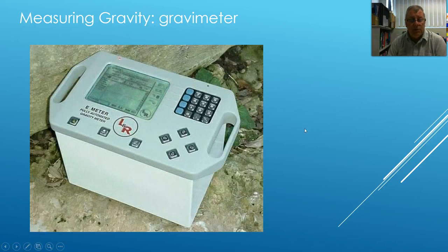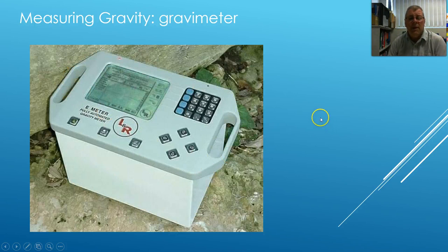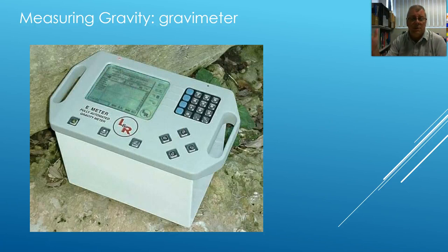And this is a modern, fully automated one which you carry around. It has its own rechargeable battery and you just press some buttons and it measures gravity to about six decimal places. So you'd be reading 9.81 and then several more digits, telling you what the gravitational field strength is in that area.